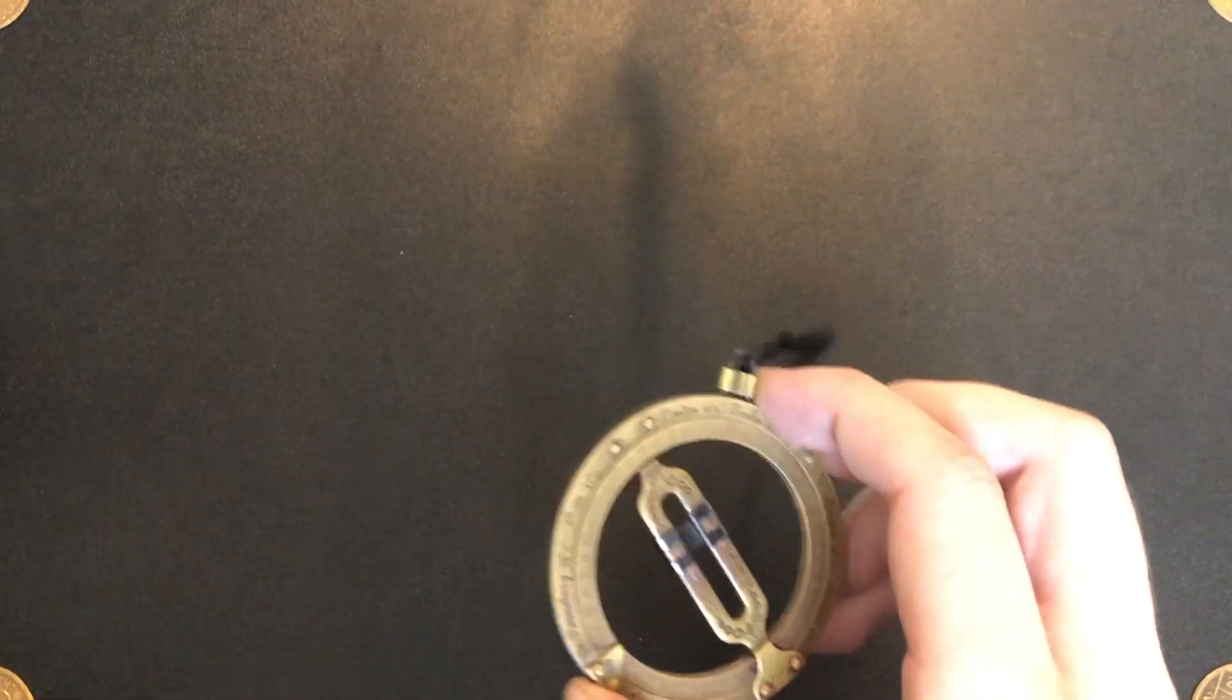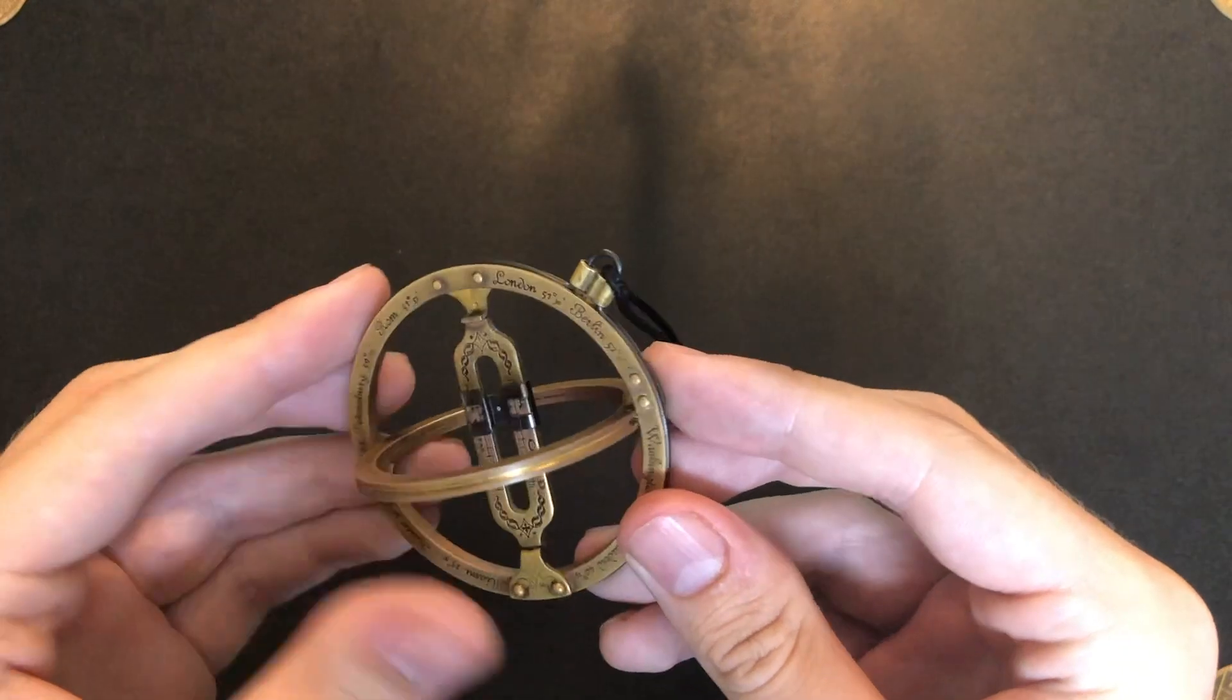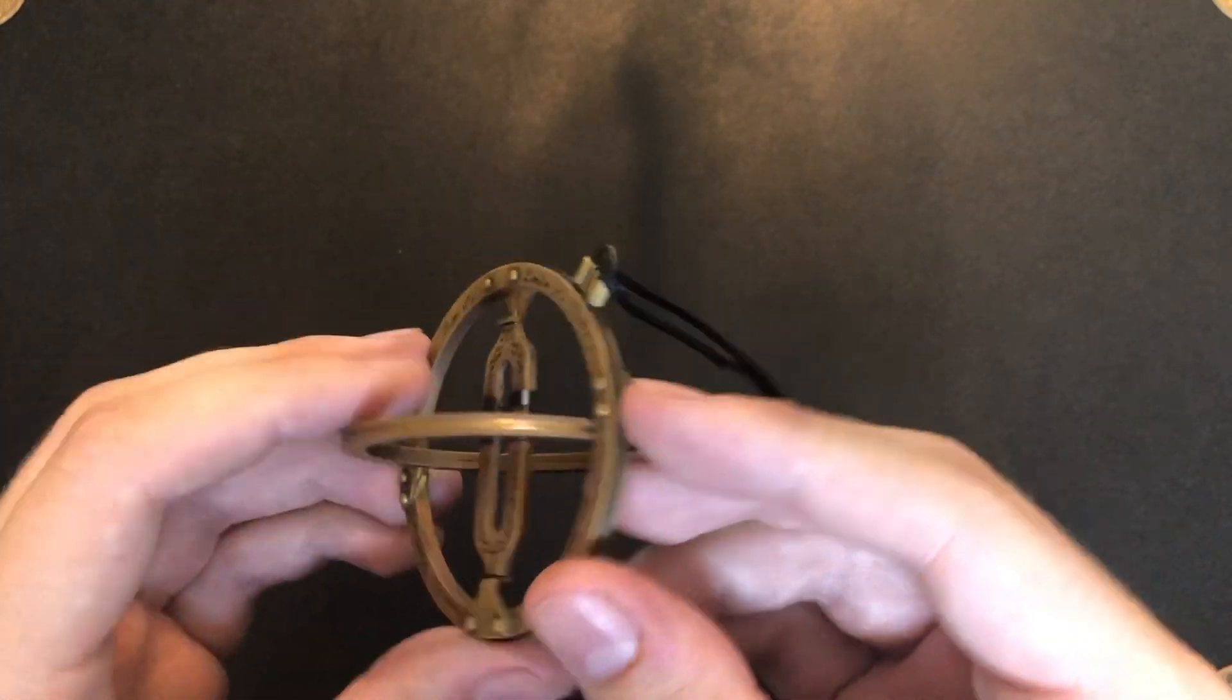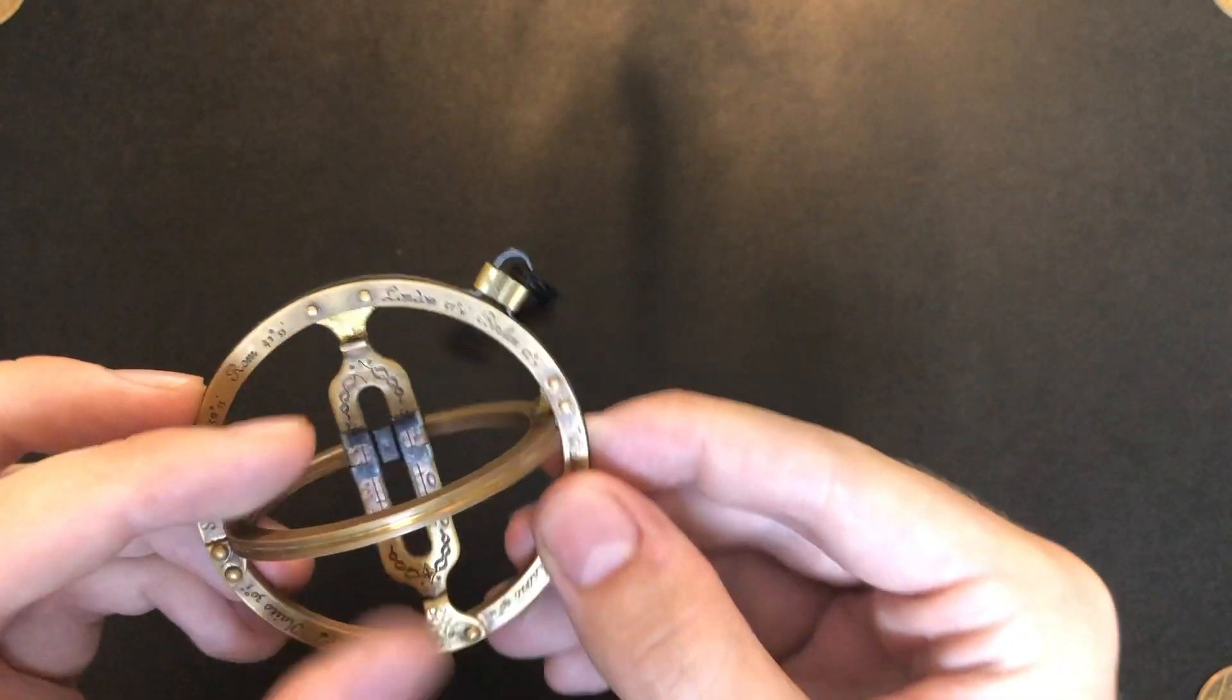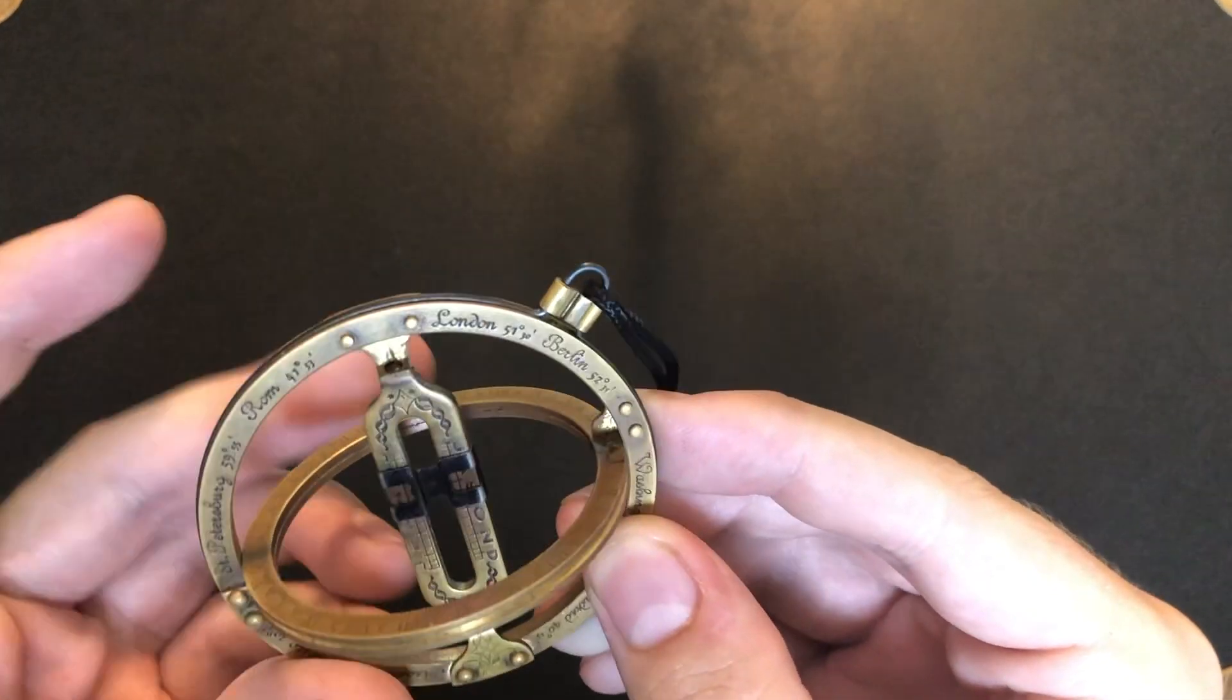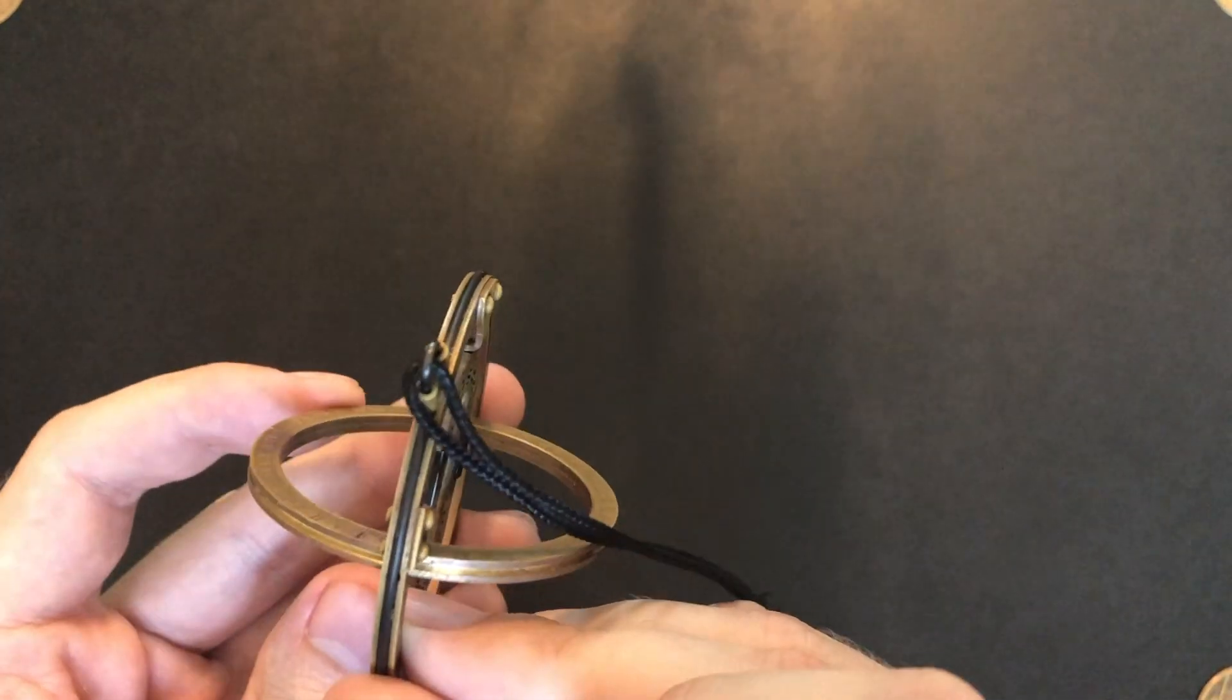In the case of the self-orienting armillary dial, the inputs and outputs are shuffled around a little bit differently, the inputs being a latitude setting and a date setting. And the outputs in this case are solar time and the direction of true north.